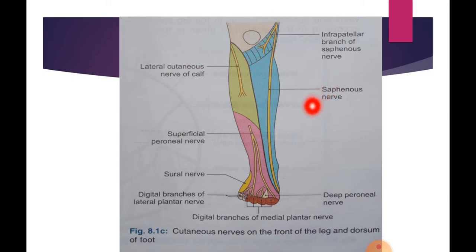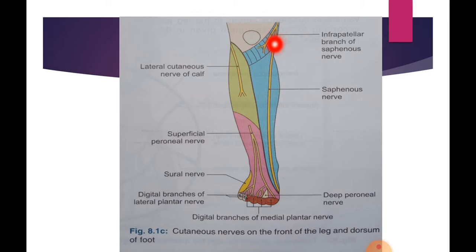The next one is the saphenous nerve. It is the cutaneous branch of the posterior division of the femoral nerve. It pierces the deep fascia on the medial side of the knee, in between the sartorius and the gracilis, then descends downwards in front of the great saphenous vein. It supplies the medial side of the leg and the medial border of the dorsum of the foot up to the ball of the great toe.